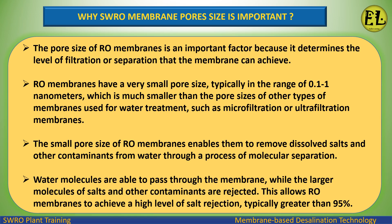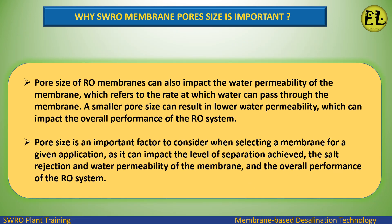Water molecules are able to pass through the membrane while the larger molecules of salts and other contaminants are rejected. This allows RO membranes to achieve a high level of salt rejection, typically greater than 95%. The pore size of RO membranes can also impact water permeability — the rate at which water can pass through. A smaller pore size can result in lower water permeability, which can impact the overall performance of the RO system.